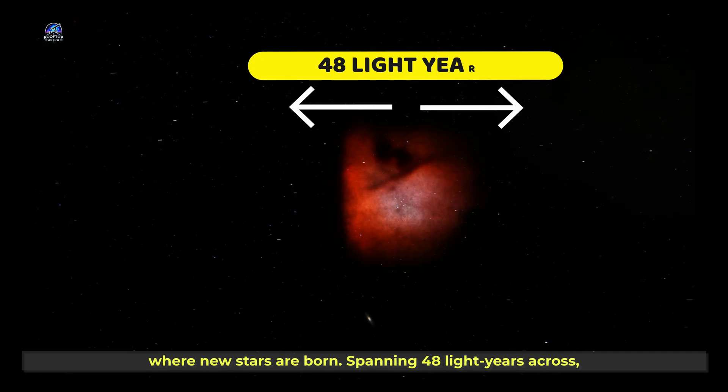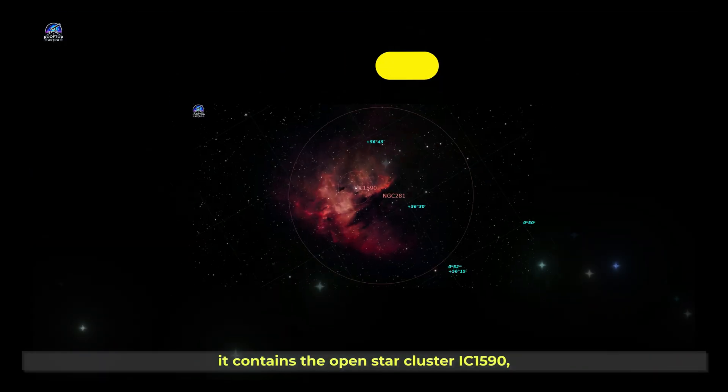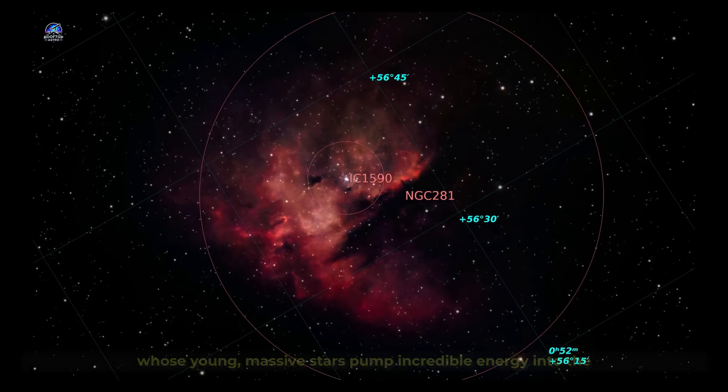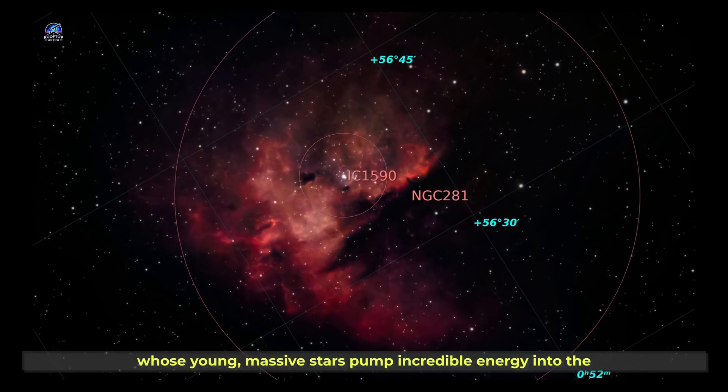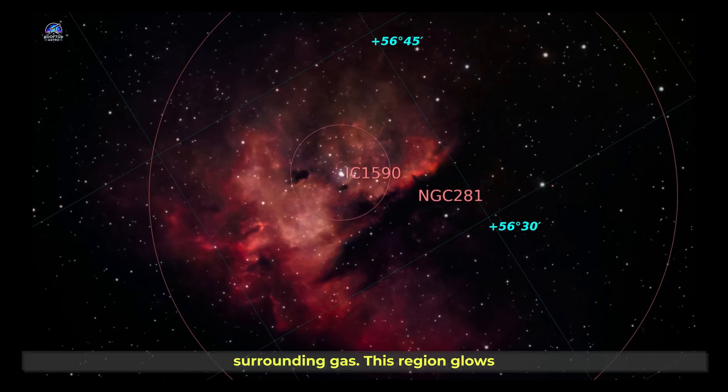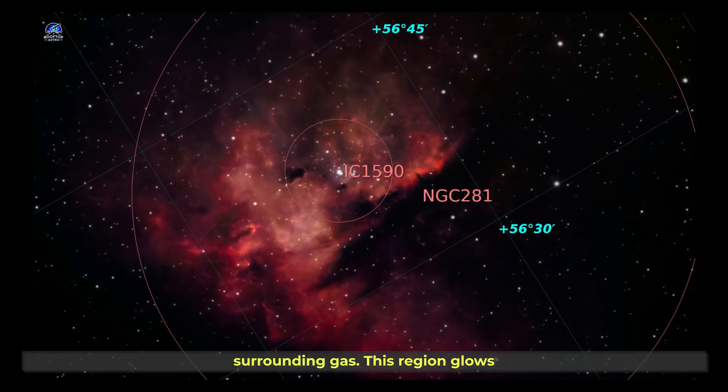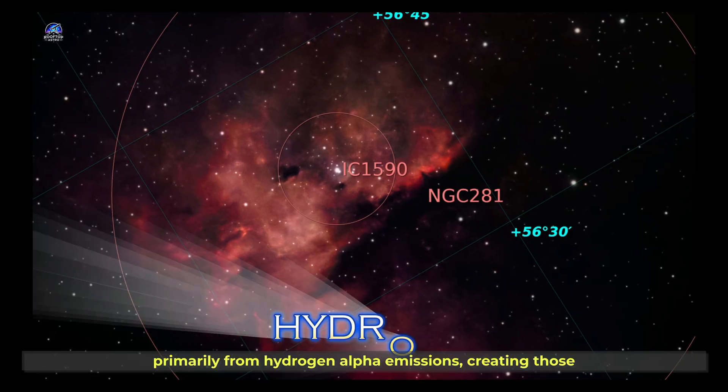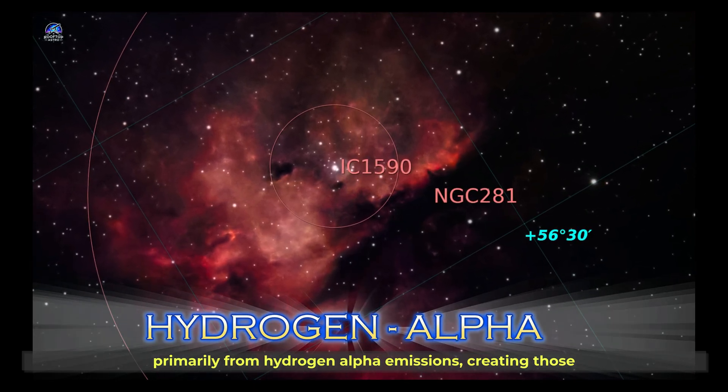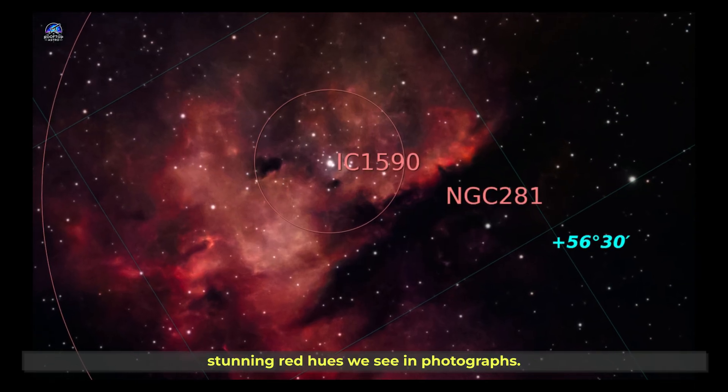Spanning 48 light years across, it contains the open star cluster IC1590, whose young, massive stars pump incredible energy into the surrounding gas. This region glows primarily from hydrogen alpha emissions, creating those stunning red hues we see in photographs.